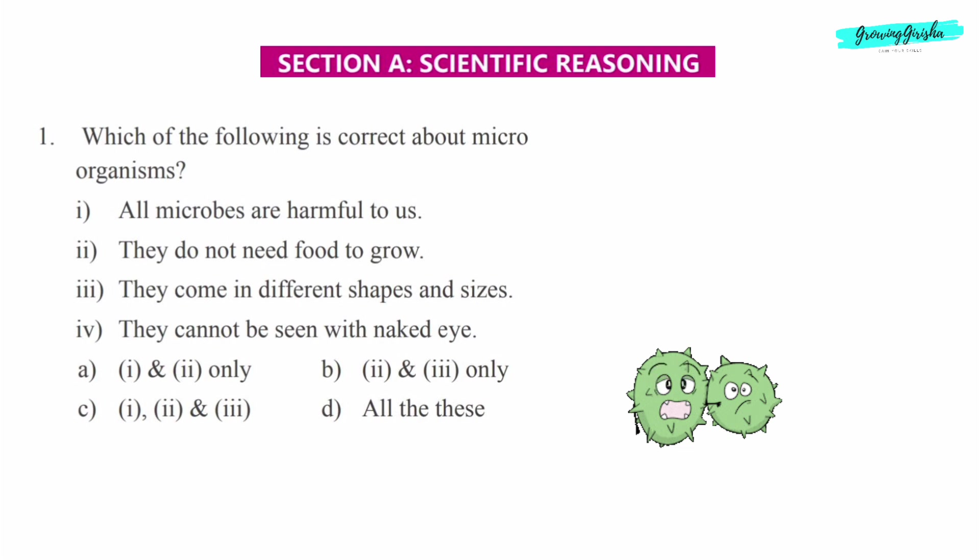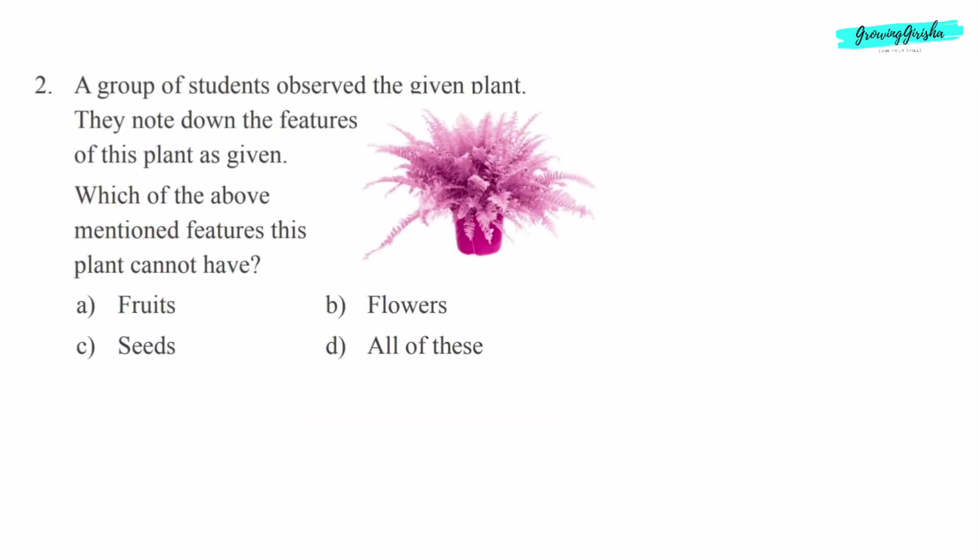Fourth, they cannot be seen with naked eyes. Option B, second and third only. Question 2: A group of students observed the given plant. They note down the features of this plant as given.